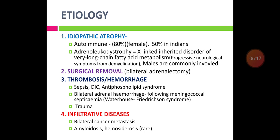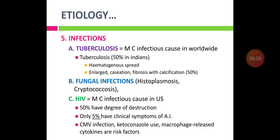Infiltrative diseases such as metastasis to bilateral adrenal glands, amyloidosis, and hemochromatosis cause adrenal insufficiency. Regarding infections, tuberculosis is the most common infectious cause worldwide; in developing countries like India, almost 50% of adrenalitis patients have tuberculosis, spread hematogenously from the lungs. In TB, the adrenal gland shows enlargement, caseation, fibrosis, and calcification. Fungal infections like histoplasmosis and cryptococcosis also cause adrenal insufficiency.